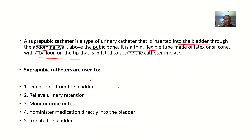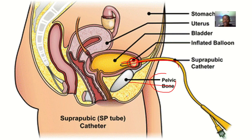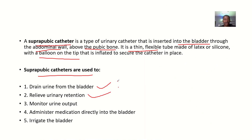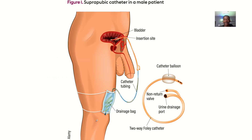Suprapubic catheters are used to drain urine from the bladder, relieve urinary incontinence — where a person leaks urine without control — and relieve urinary retention, where a person cannot pass urine. It can also be used to monitor urine output, administer medication directly into the bladder, and to irrigate the bladder.